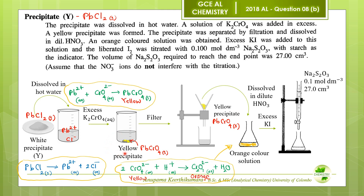The yellow lead chromate precipitate was separated by filtration and dissolved in dilute nitric acid, and an orange color solution was obtained. When dilute nitric acid was added, the medium became acidic. In acidic medium, chromate ions convert to dichromate ions. Chromate ions are yellow in color and dichromate ions are orange in color — that is why the solution becomes orange. Therefore, this solution contains dichromate ions.